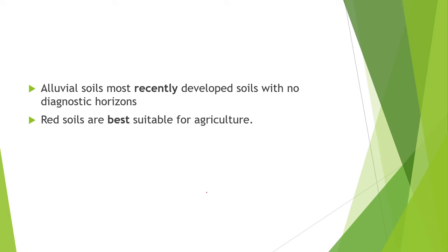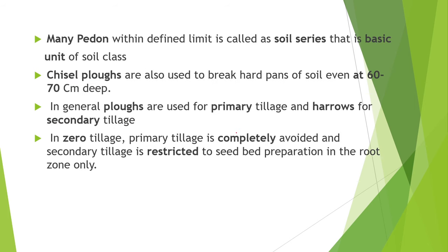Alluvial soils are the most recently developed soil with no diagnostic horizon. Red soil is best suitable for agriculture. A pedon within defined limits is called a soil series — the basic unit of soil classification. Chisel ploughs are used to break hard pans of soil even at 60-70 cm depth. In general, ploughs are used for primary tillage and harrows for secondary tillage.